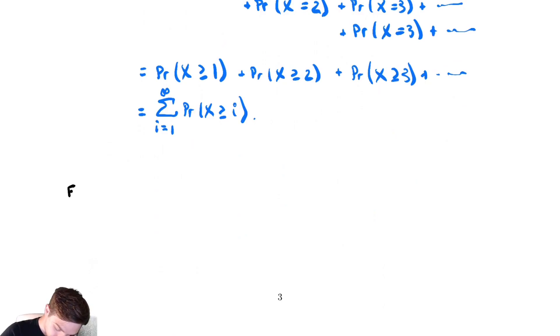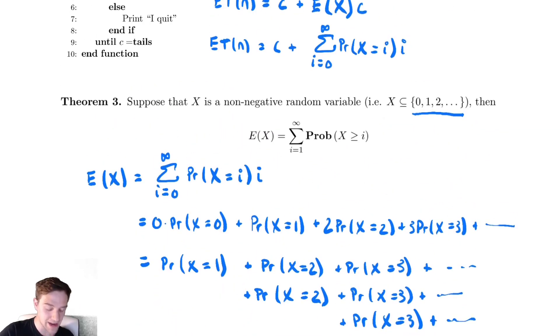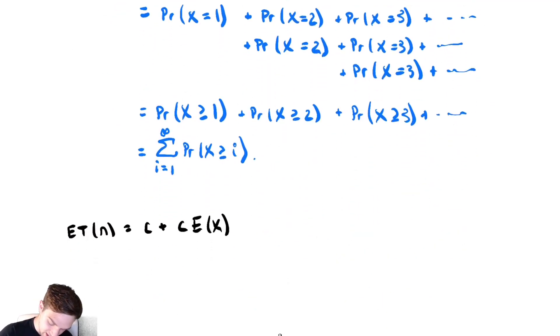ET of n is equal to c plus c times the expected value of x. And I'm going to compute that expected value of x by this formula for non-negative random variables. So this is equal to c plus c times the sum from i equals 1 to infinity of the probability that x is greater than or equal to i. So in order to analyze that summation, I must have an understanding of what those probabilities are.